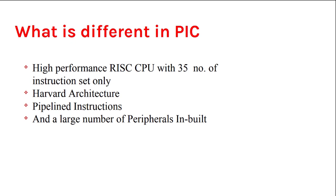What makes PIC different? It is a high-performance RISC CPU with only 35 instructions, Harvard architecture, and it supports pipelined instructions. It also has a large number of built-in peripherals. Compared to 8051, PIC has many more built-in peripherals — CAN, Ethernet, USB, I2C — everything is there.